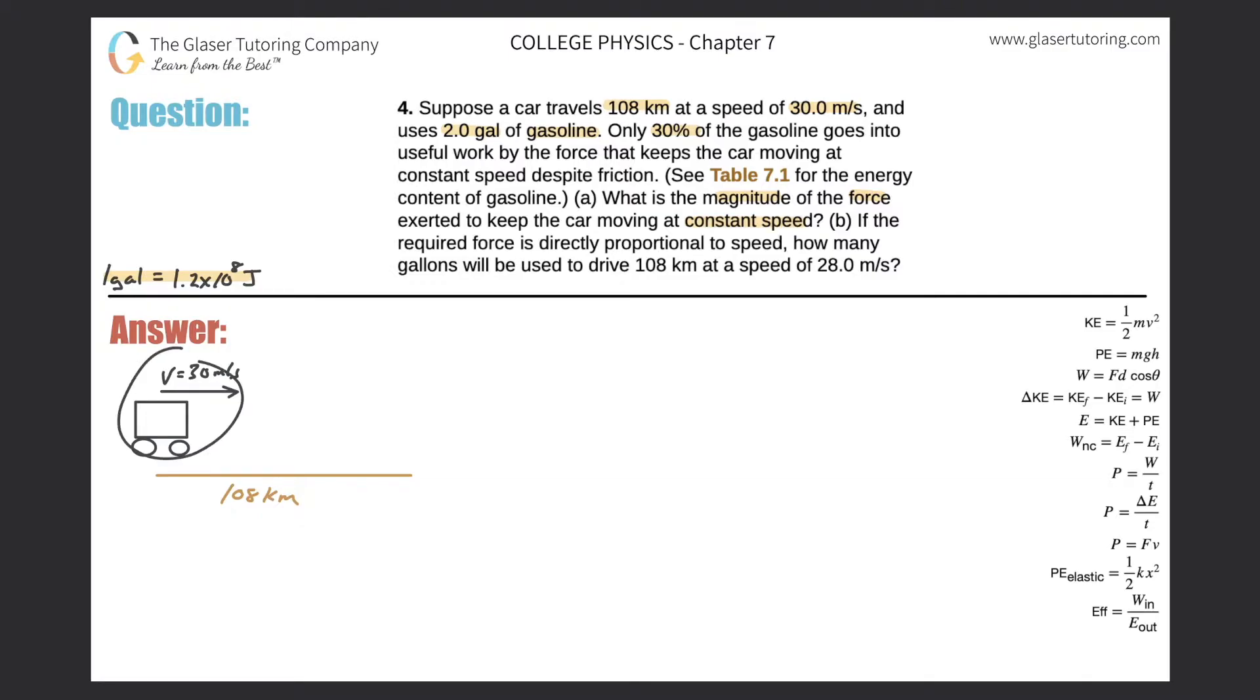Car is moving at this velocity and it has to travel 108 kilometers. Or not that it has to, but it is traveling 108 kilometers and over that 108 kilometers it is consuming 2.0 gallons of gas. Now, first thing I notice is, usually I would go right away to convert this value kilometers into meters, but it might not be necessary here. So let's just hold off for that.